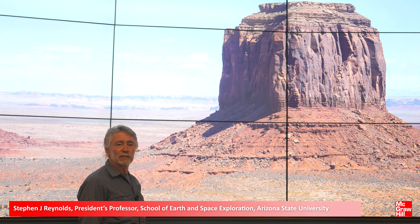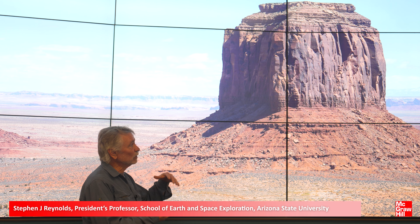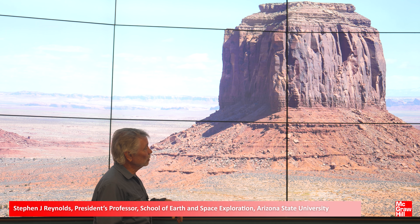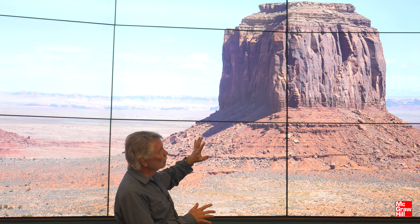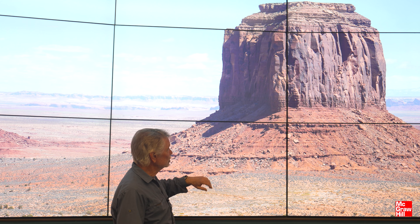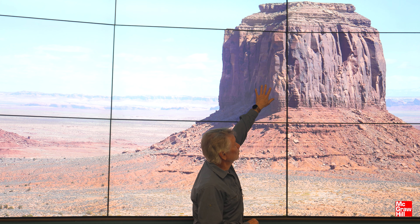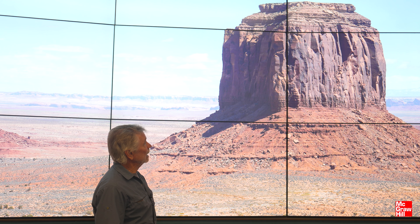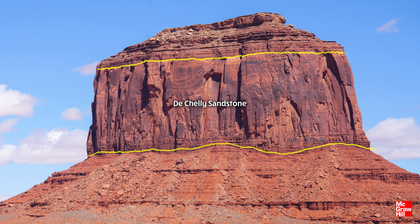Let's turn our attention to the sequence of layers expressed in the buttes and mesas of Monument Valley. There are really five or so main geologic formations. The most dominant one is the cliff-forming De Chelly sandstone. It's upper-lower Permian and it's named for Canyon De Chelly in east-central Arizona.